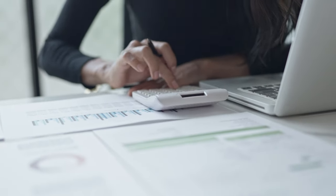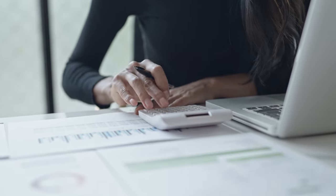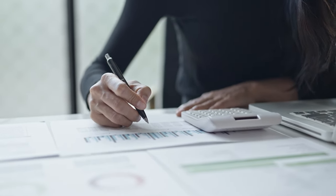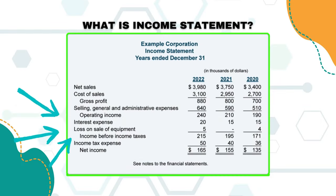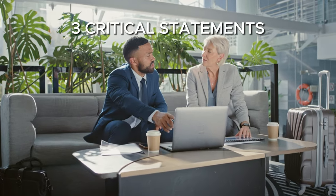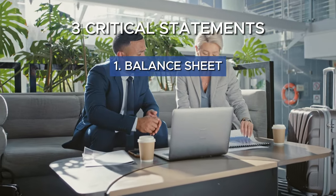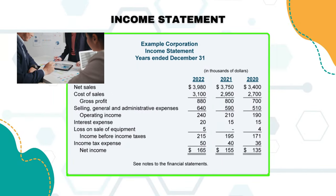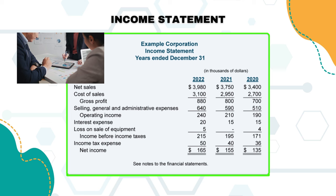Before we dive into the intricacies of explanation and analysis, let's take a moment to grasp the fundamentals of what exactly an income statement is and why companies rely on them. An income statement is one of the trio of crucial financial documents used to report a company's financial performance over a specified timeframe. These three critical statements include the balance sheet, the statement of cash flows, and the income statement. The income statement serves as a detailed breakdown of a company's financial activities during this time period, and it encompasses several key components.